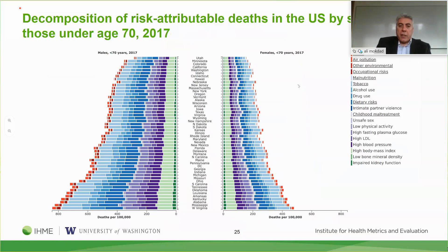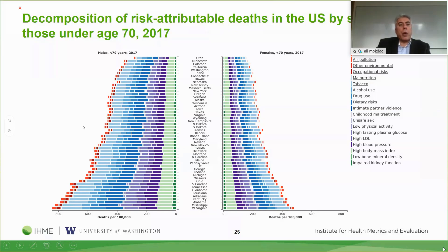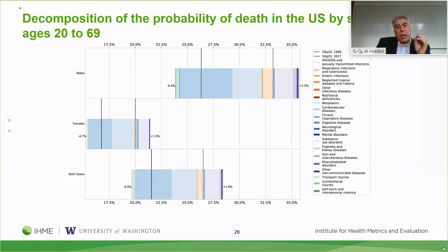Looking at risk factors driving variation by state: malnutrition in the US is very small; tobacco, alcohol, and drugs are big; high blood pressure shows a huge variation by state; high body mass index also varies greatly by state; and low bone mineral density varies as well. On our web you can click on each number to see the amount and how big it is.